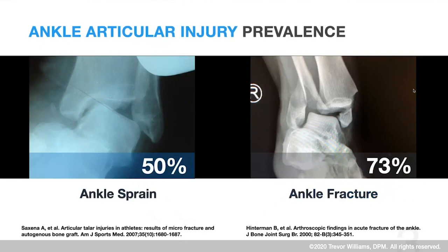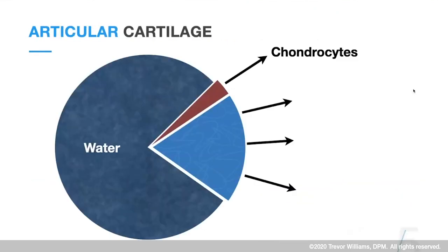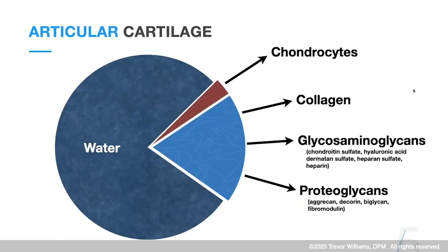Nearly three-quarters of ankle fractures will result in chondral injury — which is why I scope all my ankle fractures, to document the problem and stage treatment or have evidence for what I may be dealing with in the future. Even instability — chronic ankle instability — one in five patients will have a chondral injury, and a little over a third of patients with impingement syndrome will have one. These are indicators to consider the prevalence of an osteochondral lesion.